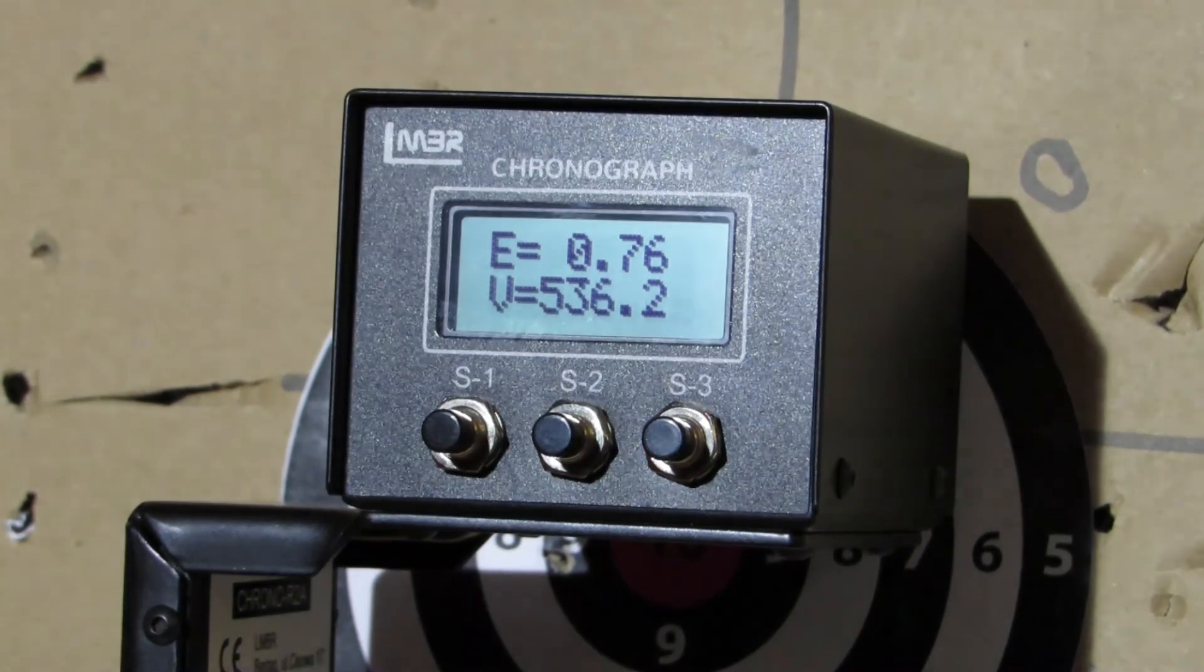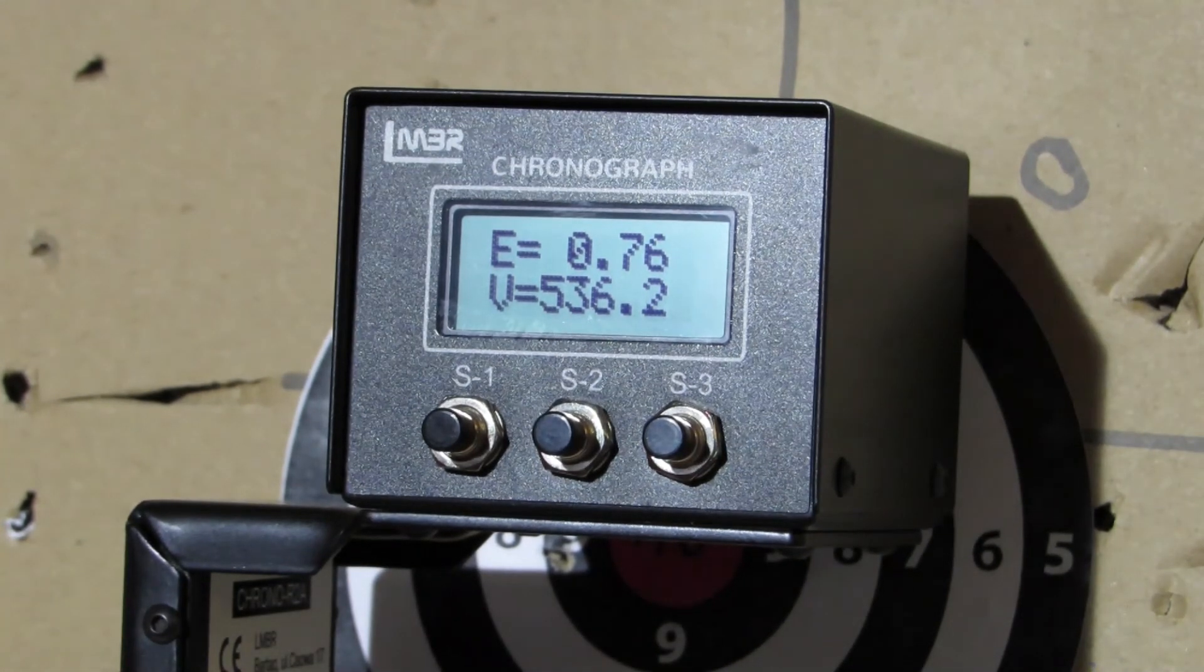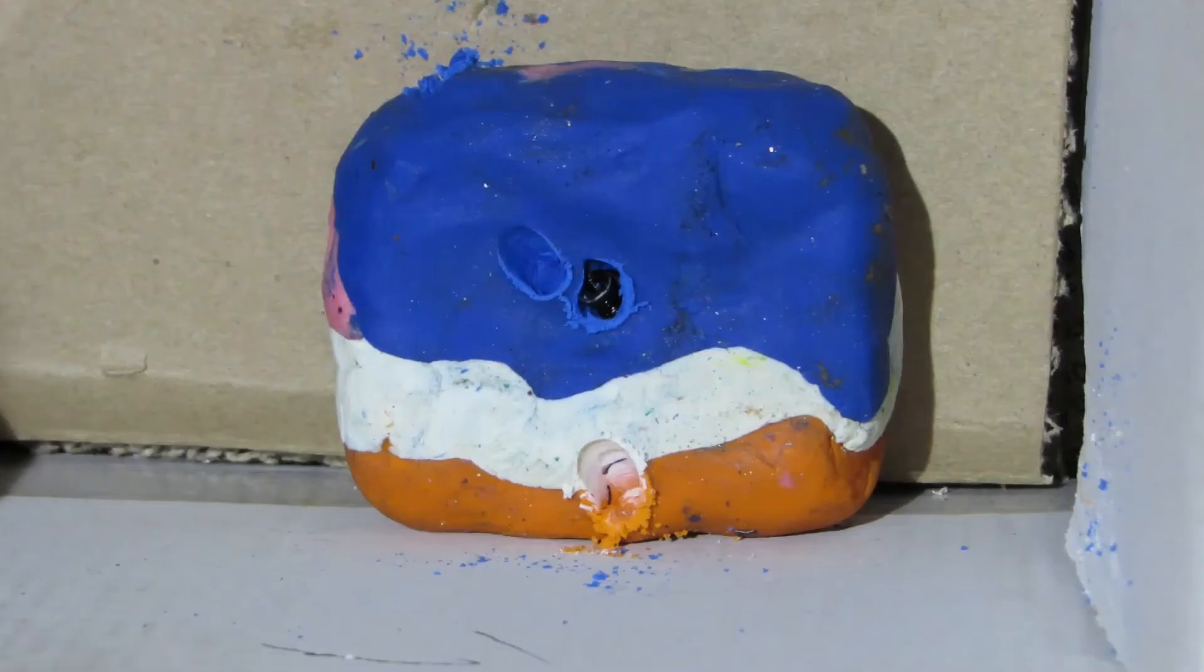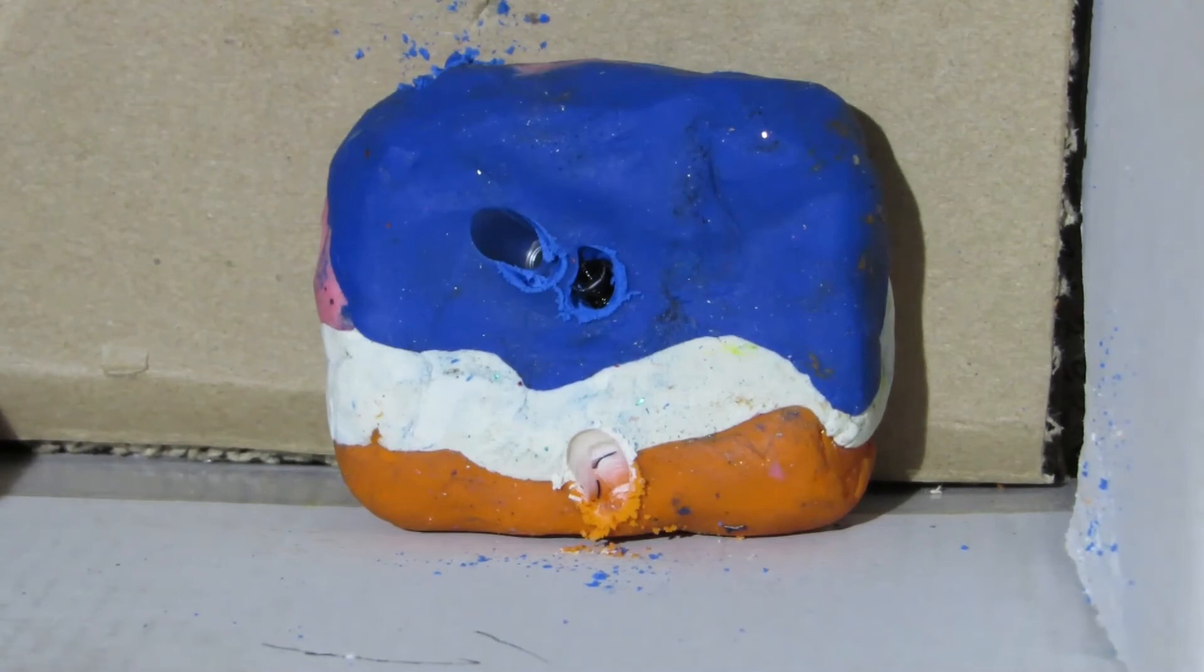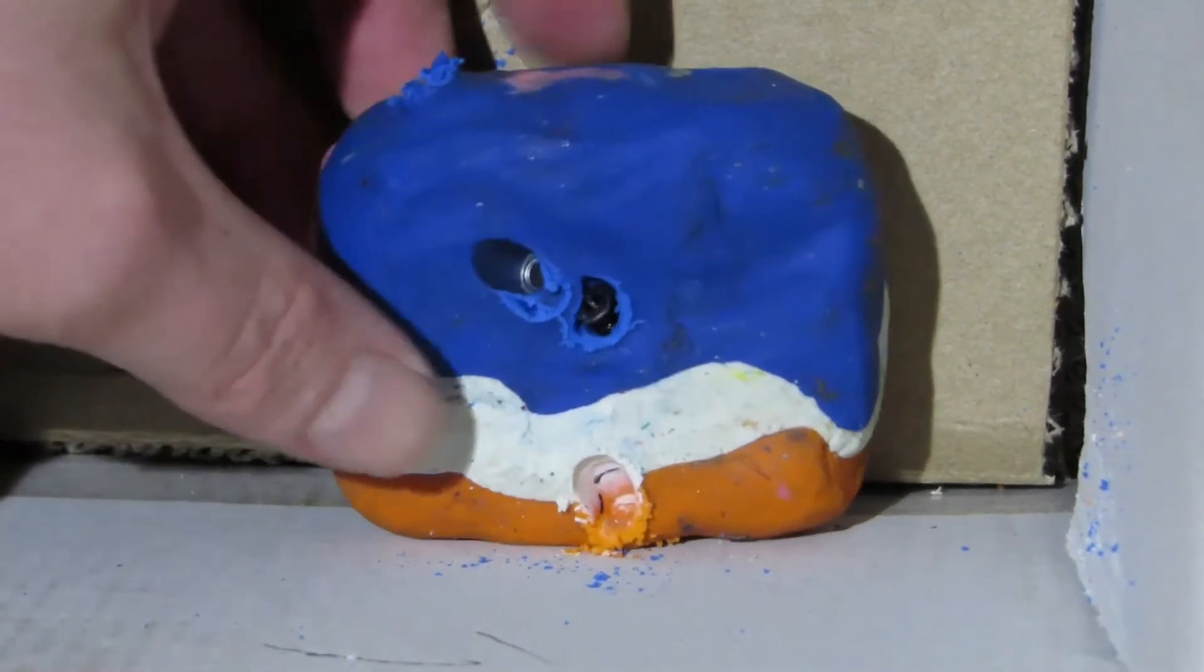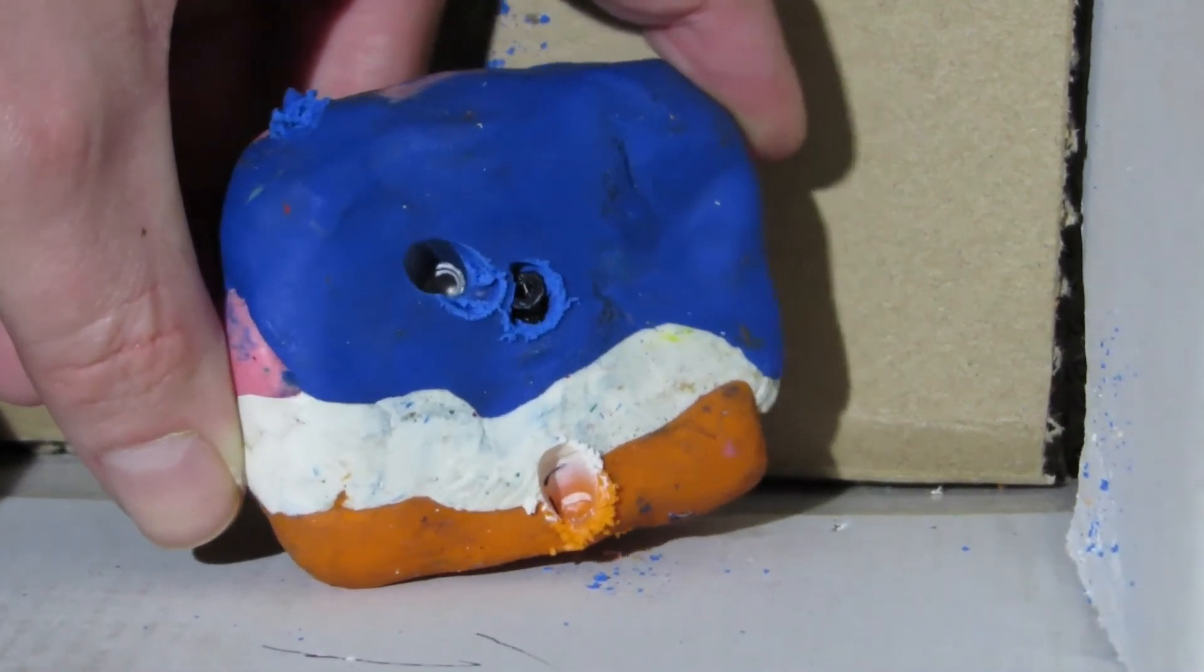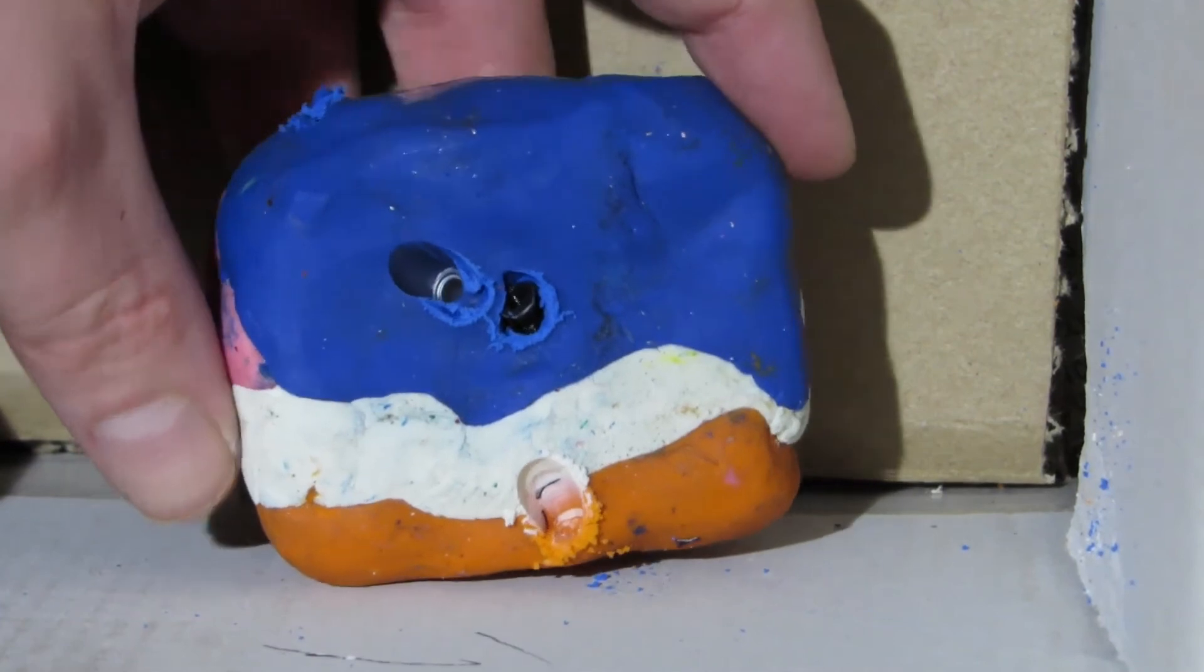Right, just for the rest, we'll put a .22 pellet through that so people can tell. Wow, 2.59 foot pound, a little bit, that's pretty good actually. 284 feet per second. Let's put the metal one into the play-doh. Well, let's duck. Right, nearly all the way through. Yeah, so that's the difference between a proper pellet and plastic.